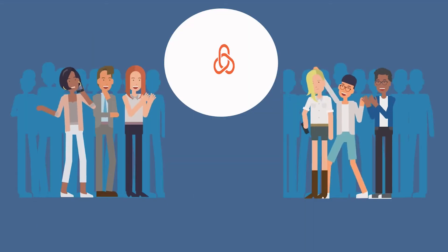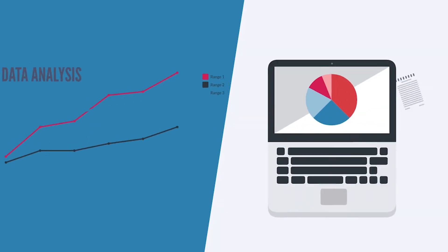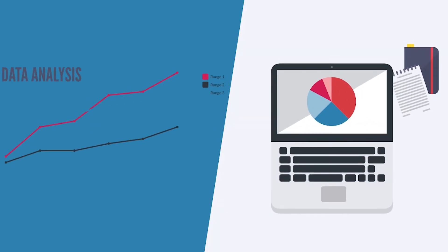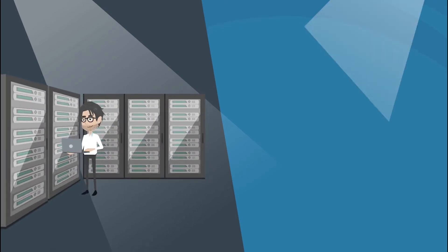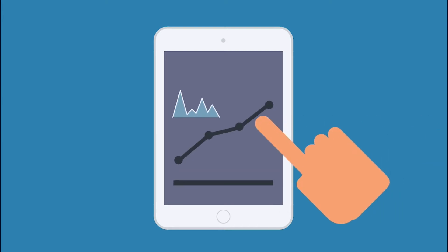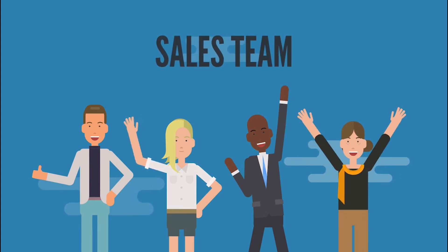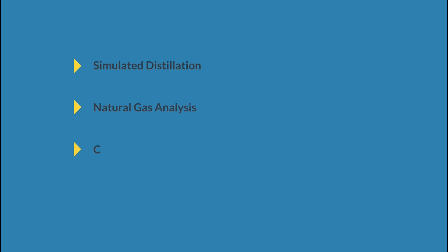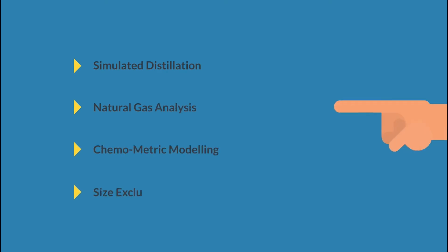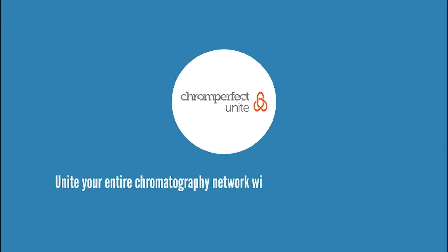ChromePerfect Unite is becoming the new market leader in universal chromatography data analysis and reporting, offering ease of use, powerful data analysis tools, and the most flexible reporting available. In addition to our standard chromatography analysis tools, ask our sales team today about industry-specific applications such as simulated distillation, natural gas analysis, chemometric modeling, and size exclusion chromatography. Unite your entire chromatography network with a single data analysis and reporting platform.